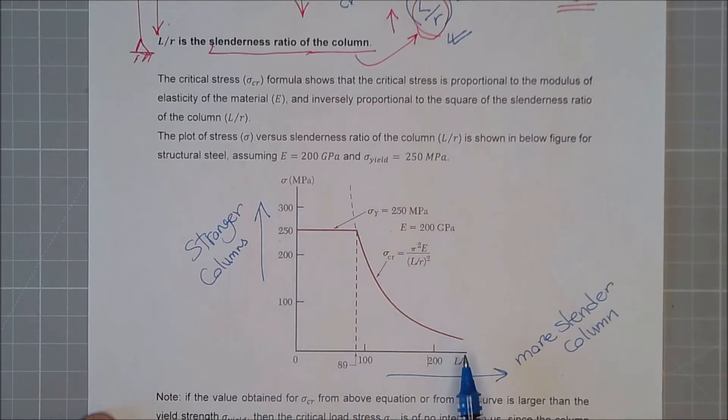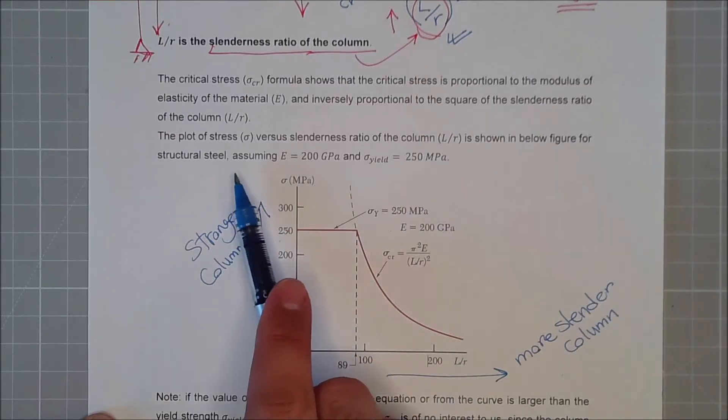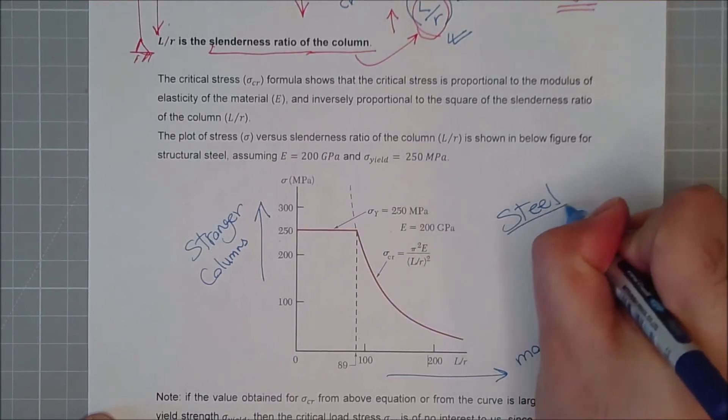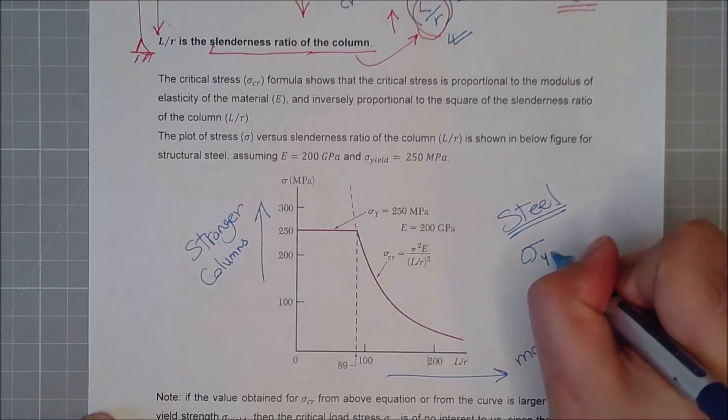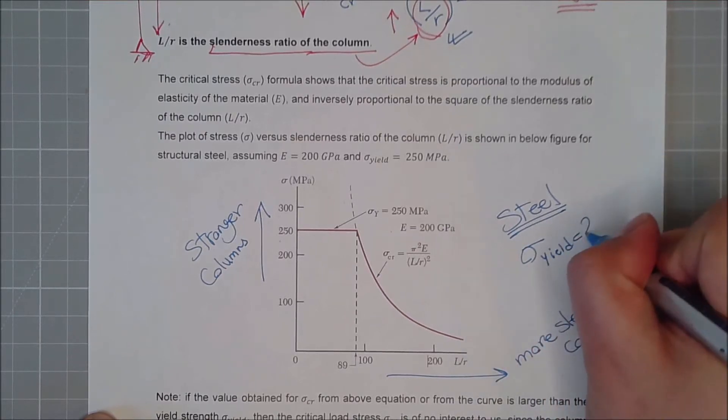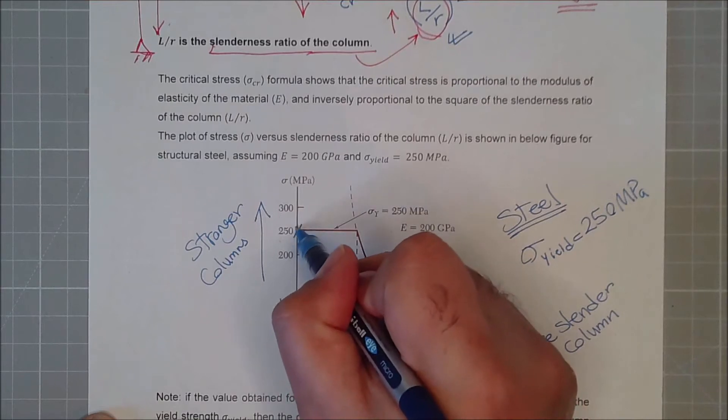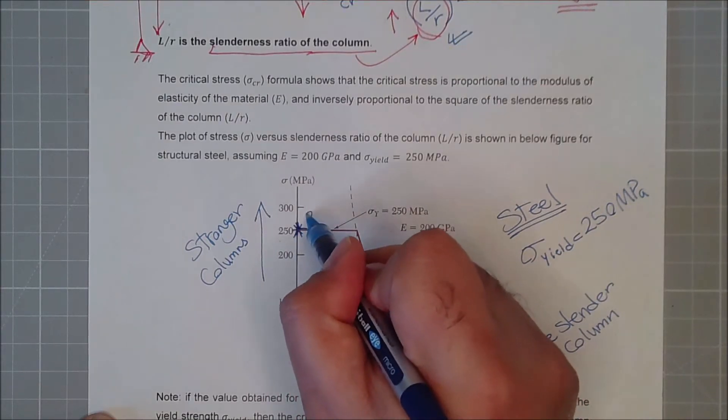Now, looking at this plot, assuming for the same material, so my material is steel, and its yielding point is 250 megapascals. Yeah, so this, let's say, is my yielding point, Fy.